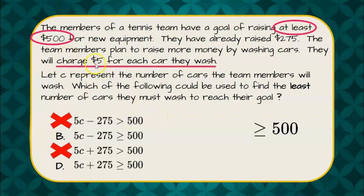Then we know that we are going to charge $5 for each car that we wash, so that is 5 times the number of cars. We don't know what that is, so we use the variable C.